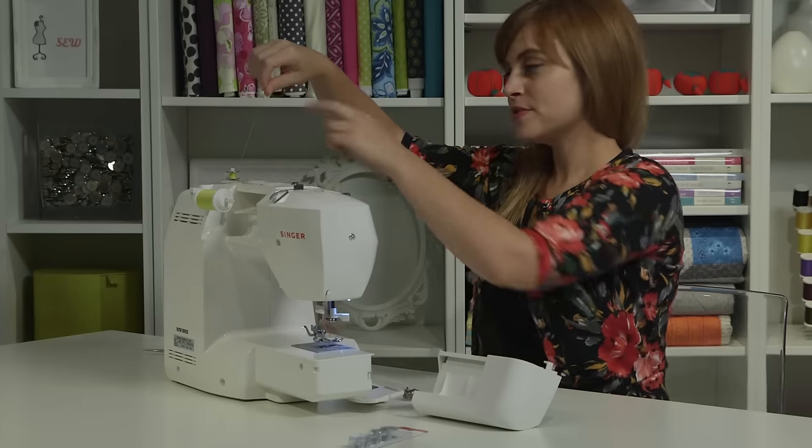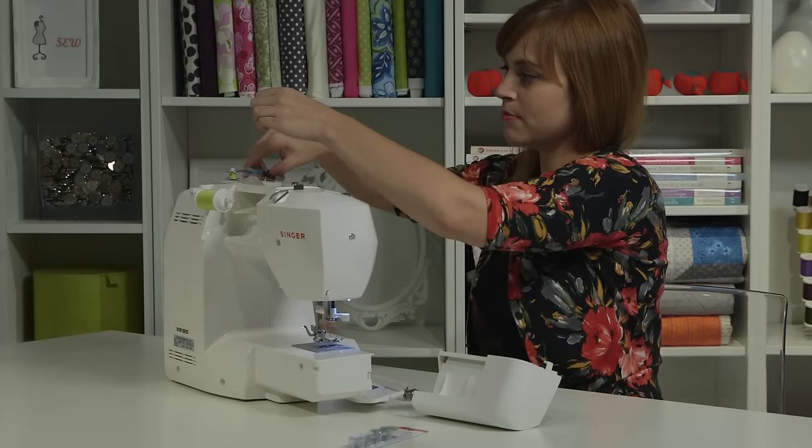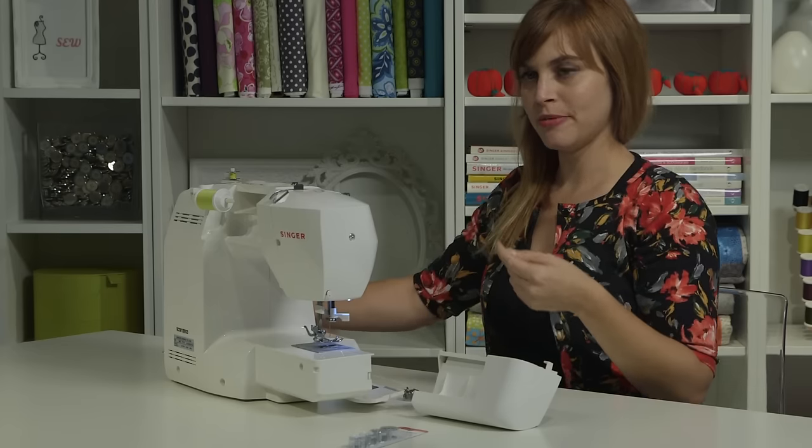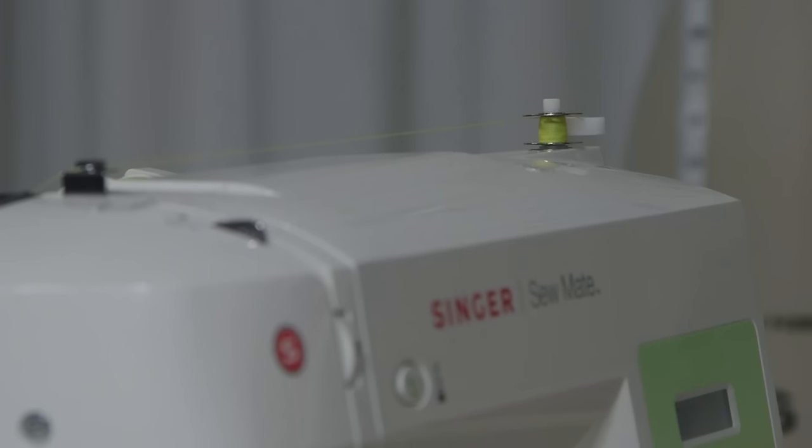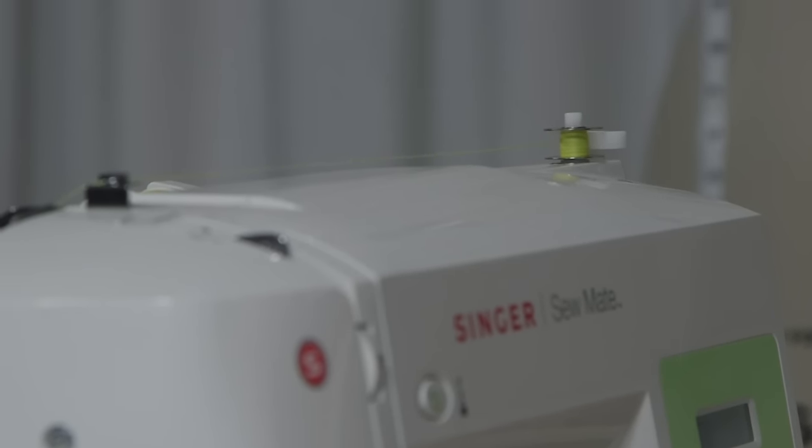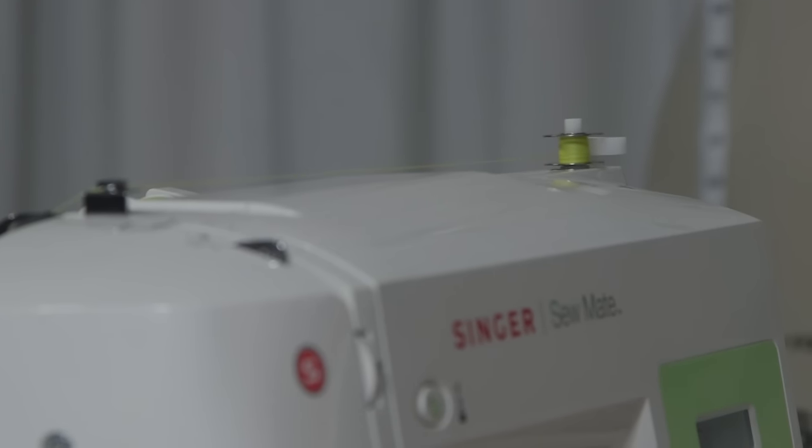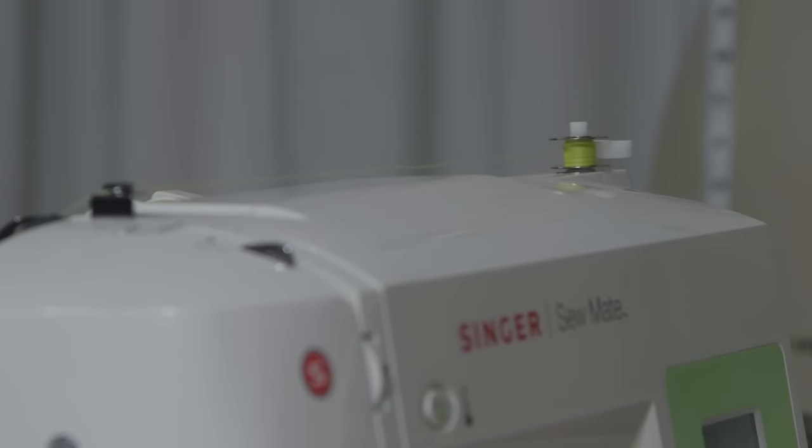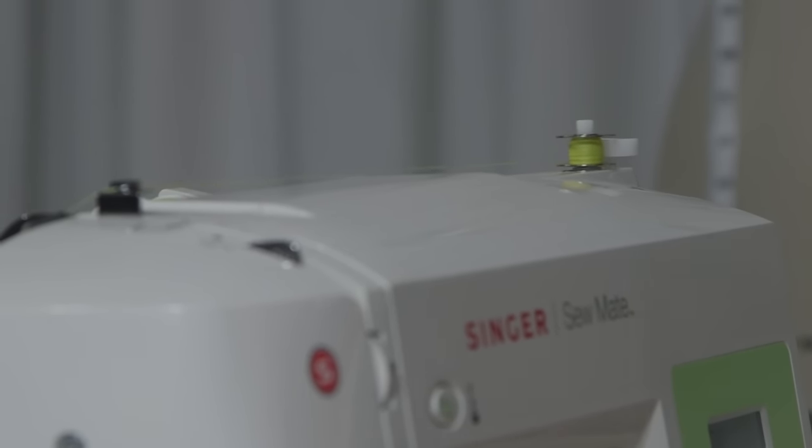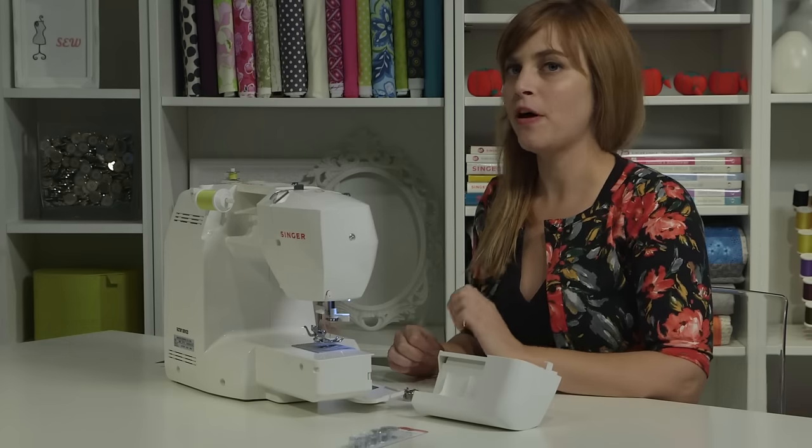Once you wind for a few seconds, you can stop and trim the tail close to the bobbin, because now it's buried so it won't come unravel, and then you can just keep pushing the pedal until you fill the bobbin. It'll stop automatically. If you're not going to do that much sewing, you can stop before it's full, but if it's your first bobbin, you might as well fill it up all the way.